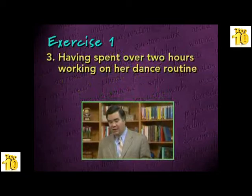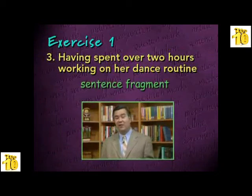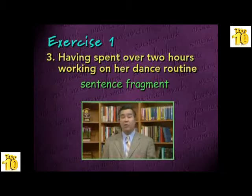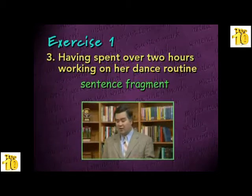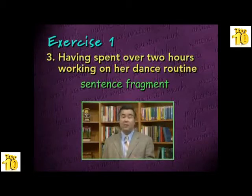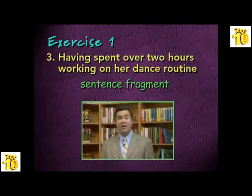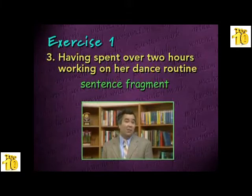The third example: 'Having spent over two hours working on her dance routine.' This is the sentence fragment. It doesn't express a complete thought — it doesn't say who spent two hours on the dance routine. The person doing the action is missing from this sentence, so we don't really understand what the writer is trying to convey. This is a sentence fragment, not a complete sentence, and if it appeared in writing it would be considered incorrect.